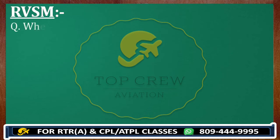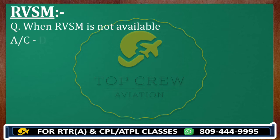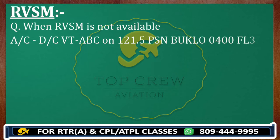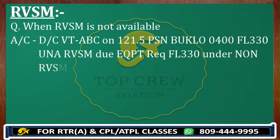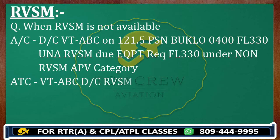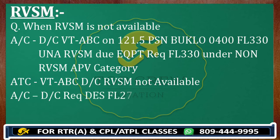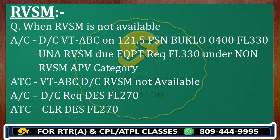If ATC is not giving you permission — for example ATC responds 'Victor Tango Alpha Bravo Charlie, Delhi Control, RVSM not available' — then you request descent. Call: 'Delhi Control, request descent flight level 270.' ATC will reward: 'Clear descent flight level 270.' This applies when you requested continuation under non-RVSM approved category but RVSM approval was not available.